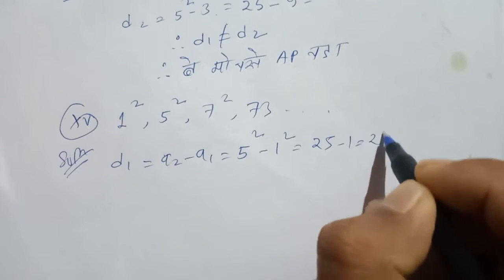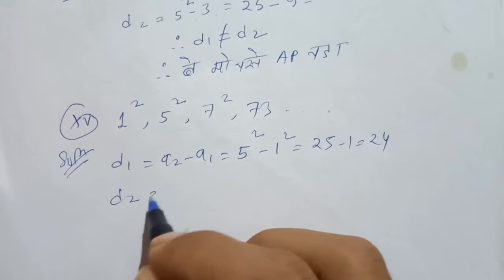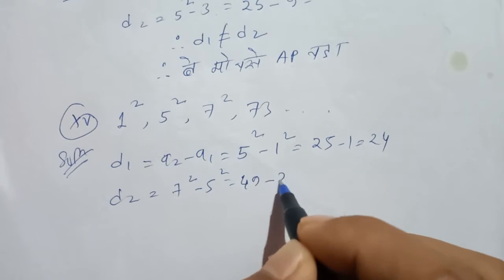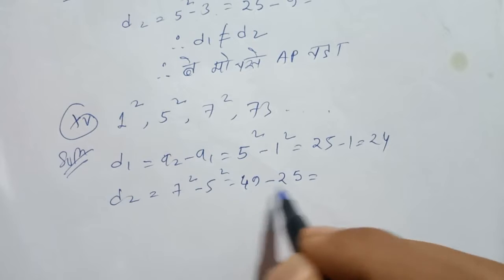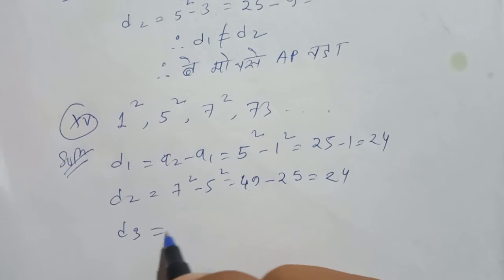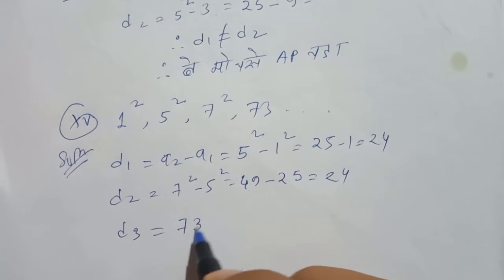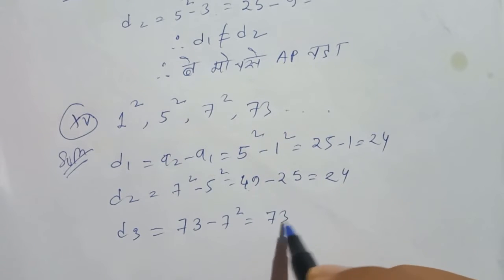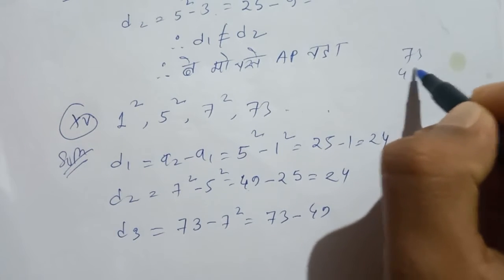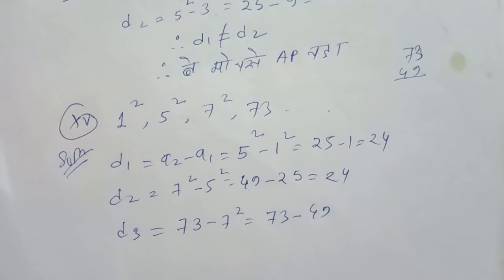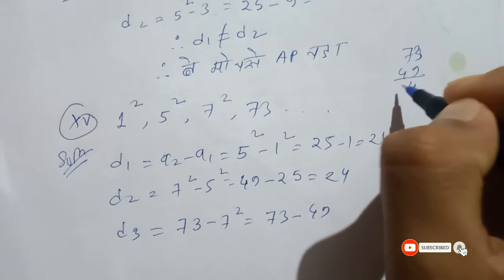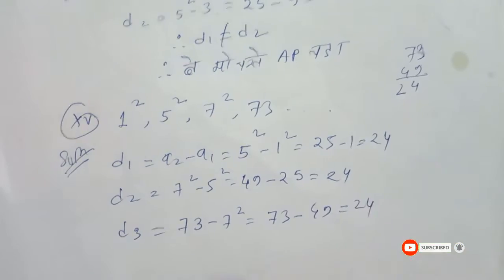A2 equals 5 squared minus 1 squared. 5 squared is 25 minus 1, equal to 24. D2 is computed similarly using 7 squared and 5 squared.